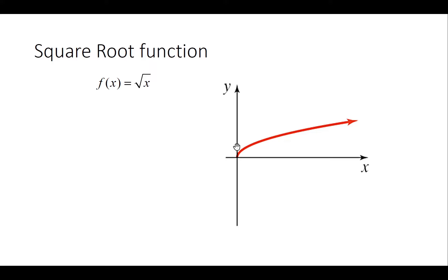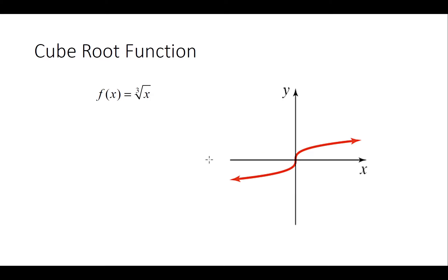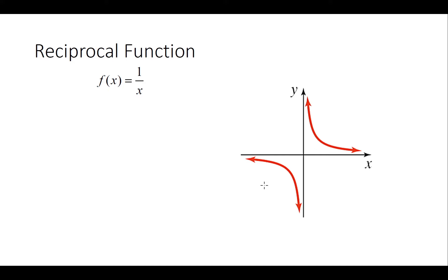The square root function starts from 0 and has nothing to the left side because the function is undefined when x is negative. Next is the cube root function, and then there is the reciprocal function, which is 1 over x.